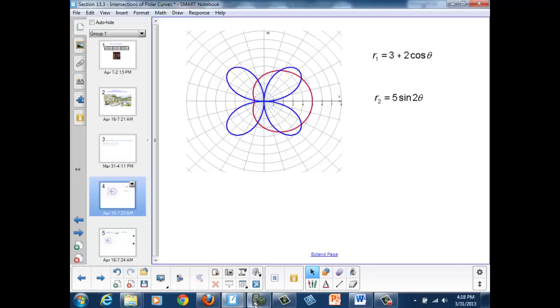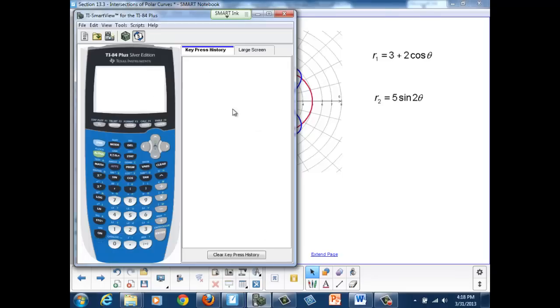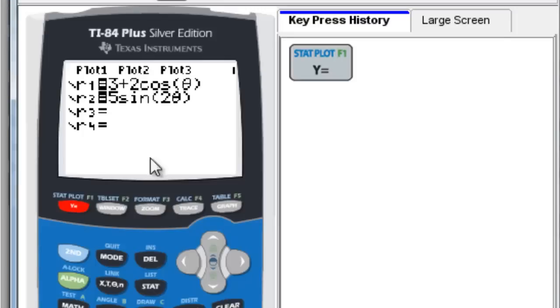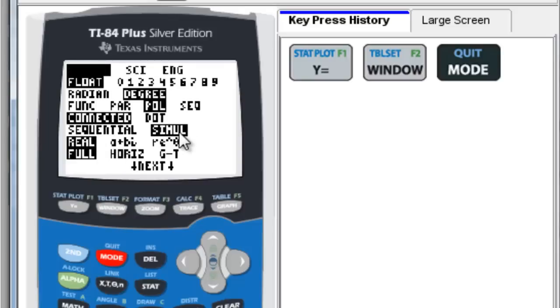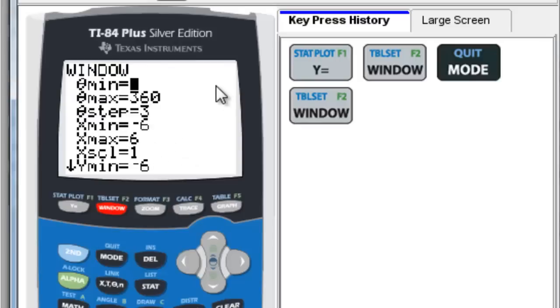Let's watch how these graphs are generated on the calculator. You'll see that I've put these two graphs in, and I've set my window to go from 0 to 360, and I've made my theta step a little smaller so that we can see the graphs generated slowly. I've also, in my mode, changed from sequential to simultaneous graphing.